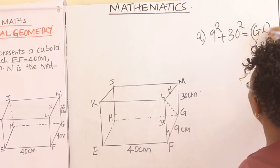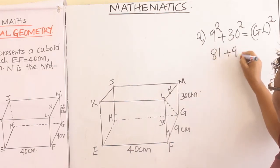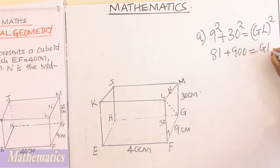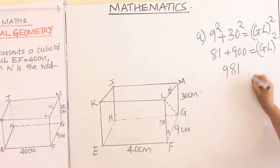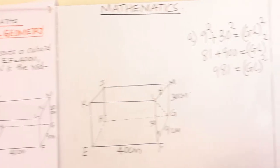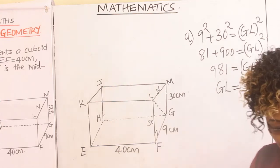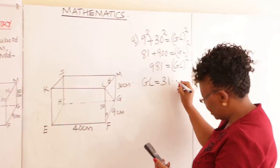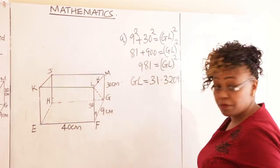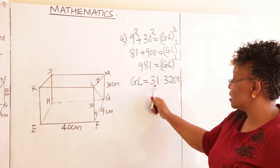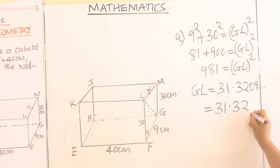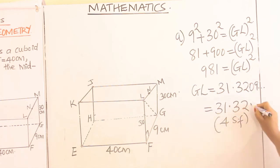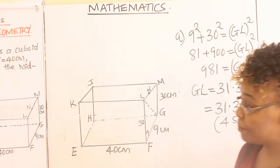So we have 81 plus 900 equals GL squared. Adding these gives 981 equals GL squared. Finding the square root using a calculator gives 31.3209... Rounding to four significant figures — one, two, three, four — our answer is 31.32 centimeters. That is our GL diagonal.